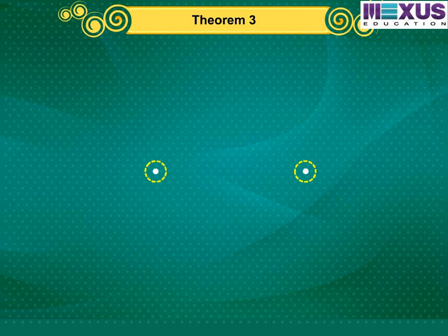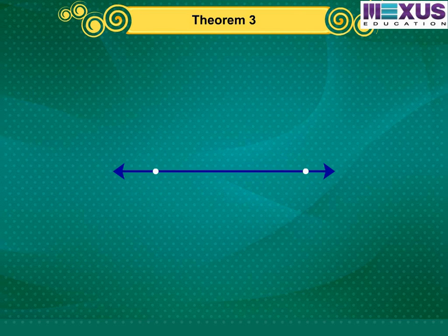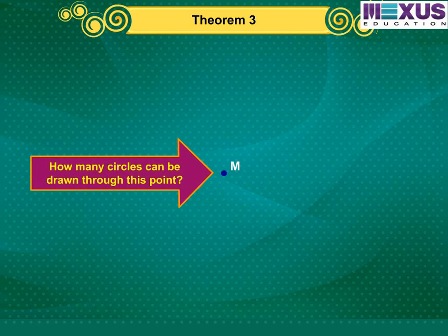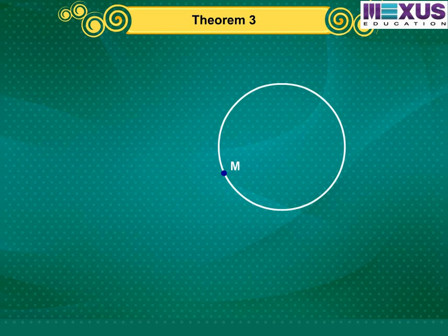We know that two points are sufficient to determine a line. That is, there is one and only one line passing through two points. Now, what can we say about how many points are sufficient to determine a circle? Let's find it. Take a point M. How many circles can be drawn through this point? We see that there may be as many circles as you like passing through this point.